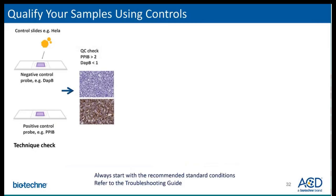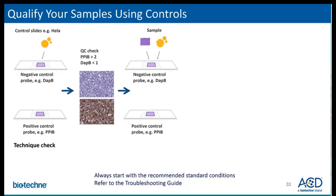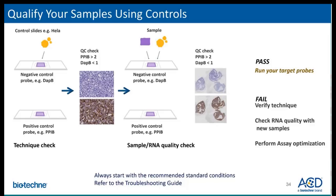It is very important to have proper controls for RNAscope assays. If you are running RNAscope for the very first time, we recommend running positive and negative control probes on our control slides, such as HeLa pellets, to ensure that the assay setup in the lab is optimal. Then proceed running the assay using our control probes on your sample to assess RNA quality and to determine the best pretreatment conditions based on signal and tissue morphology. If your sample passes QC, you can move on to running your target probe; otherwise, verify your technique, check RNA quality, or perform assay optimization.